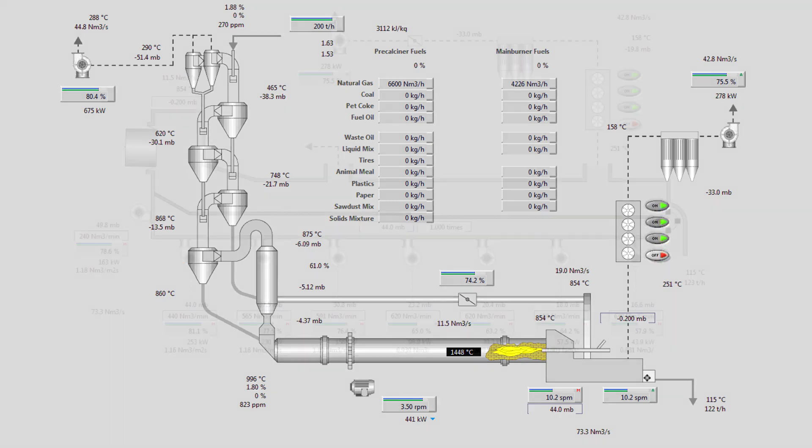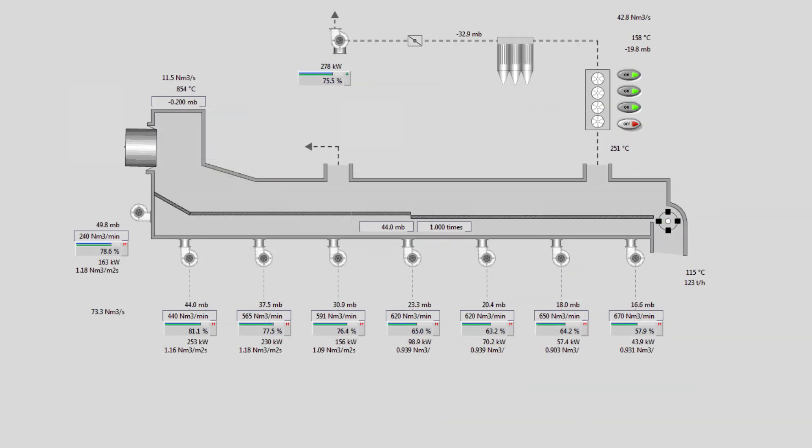We can see the cooler. And going into more details. Notice the secondary temperature at 854 Celsius, the clinker temperature at 115 Celsius, the under-grate pressure at 44 millibars. Notice that we take this reading from fan 2. It is usually done this way since pressure at fan 1 is normally unstable.